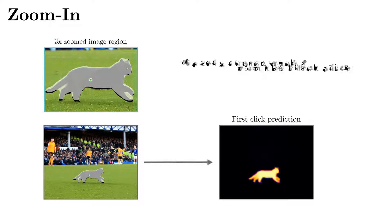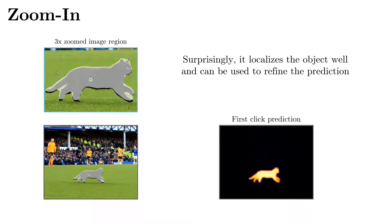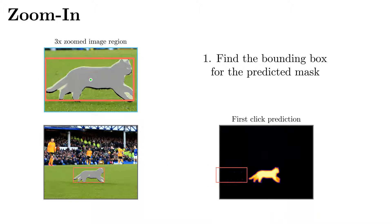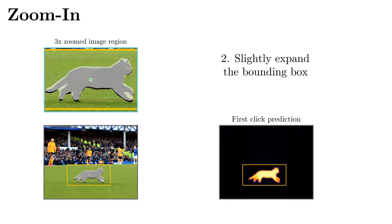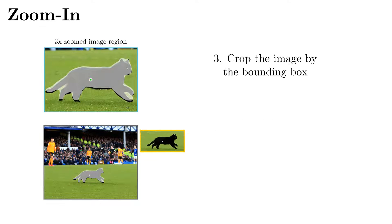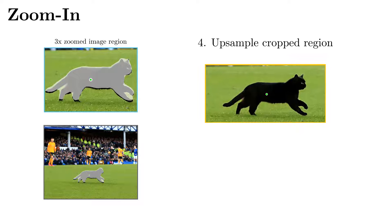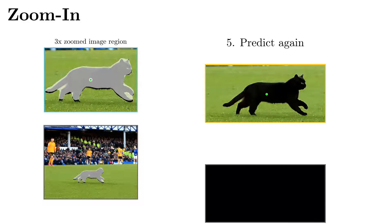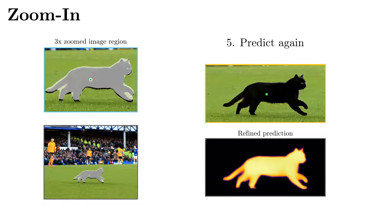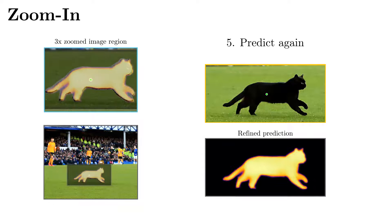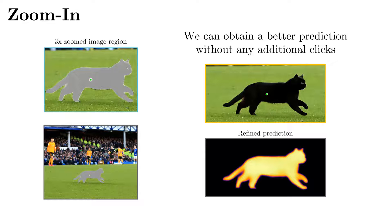Let us see zoom-in technique working step by step. Find the bounding box for the predicted mask. Slightly expand the bounding box. Crop the image by the bounding box. Upsample the cropped region. Predict again. Zoom-in allows to obtain a better prediction without any additional clicks.